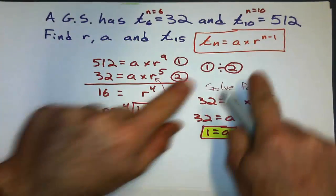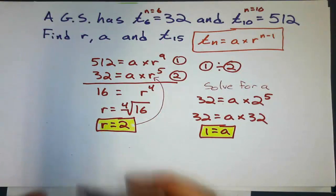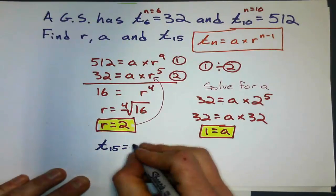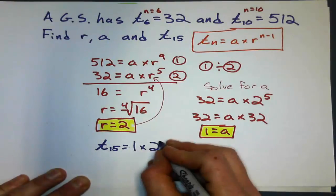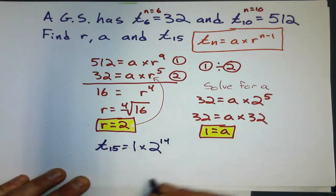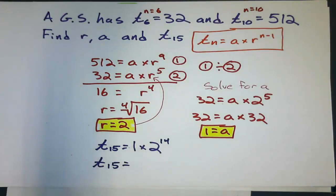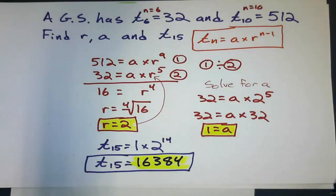I've got both values, so I can substitute them in to find the 15th term. The 15th term is the first term, 1, times the common ratio, 2, to the power of 14, which equals 16,384. We can do these!